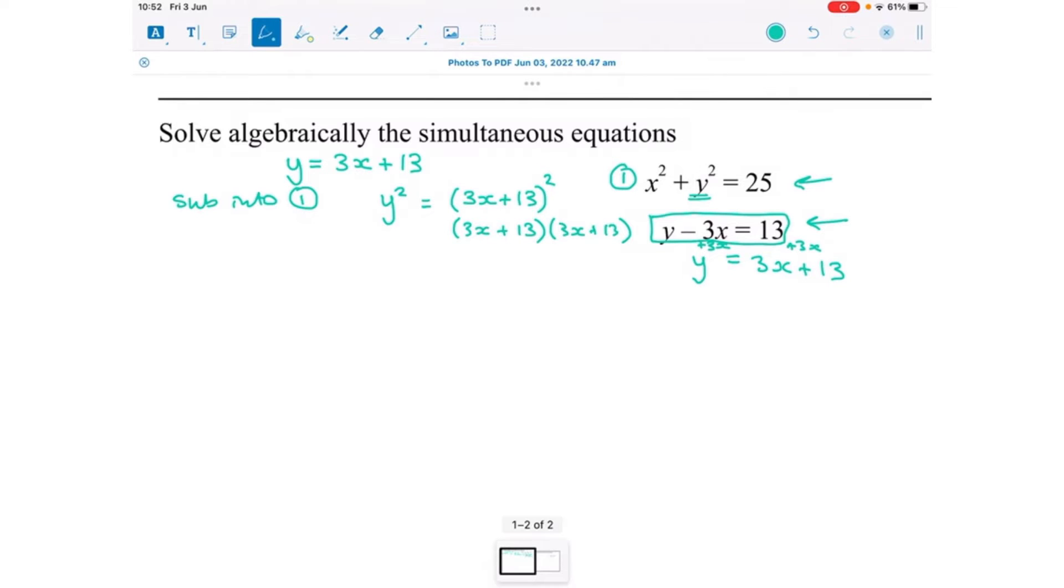And that is 9x squared, add 39x, add another 39x, add 169, which is 9x squared, add 78x, add 169. And that is y squared.